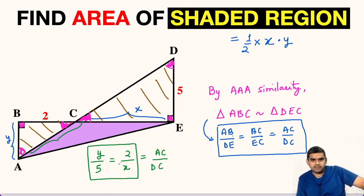Now, let us focus on this part of the equation. If we cross multiply, X gets multiplied with Y and 5 gets multiplied with 2. So from here, we will get X times Y equals 10.